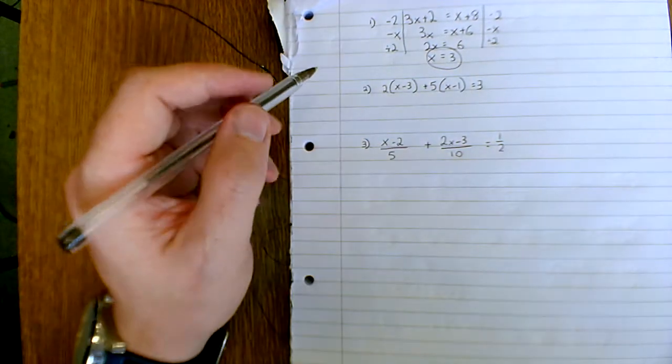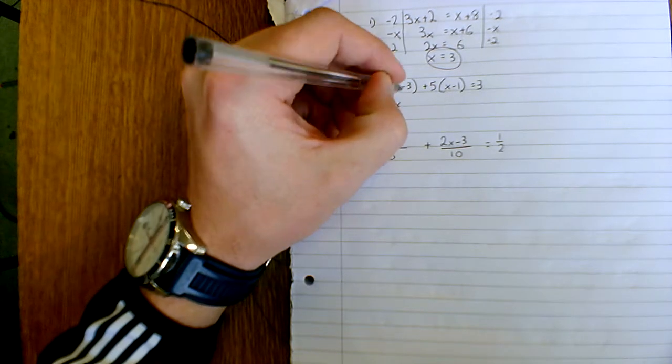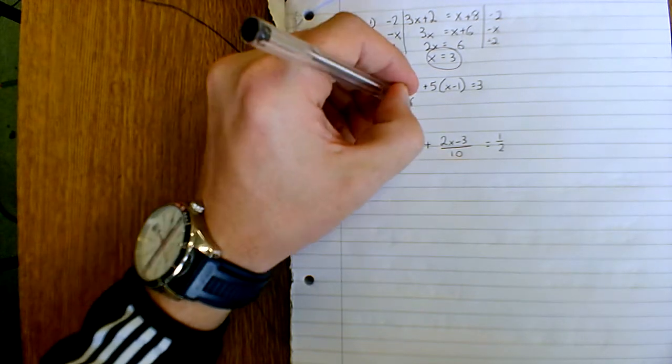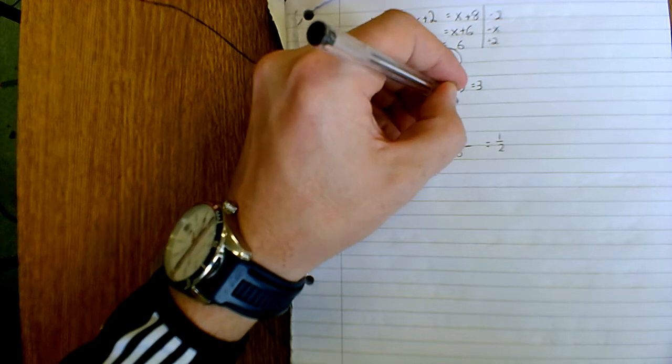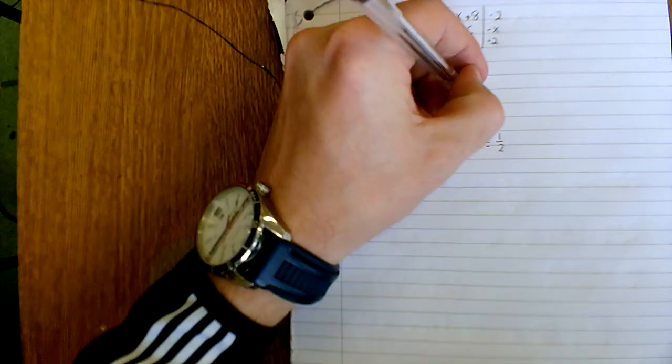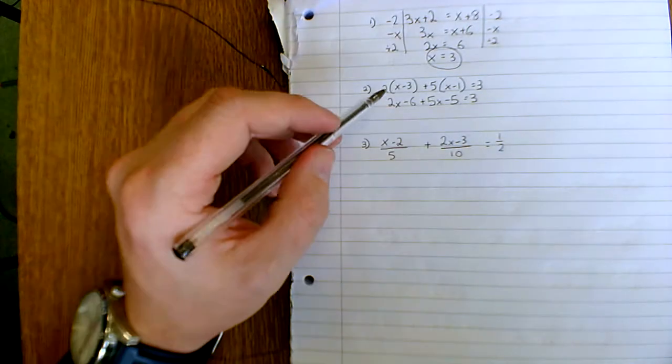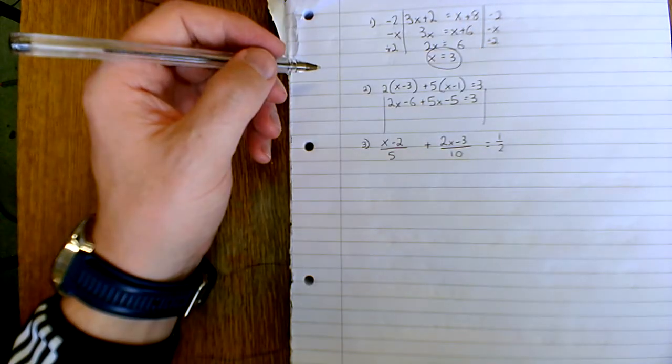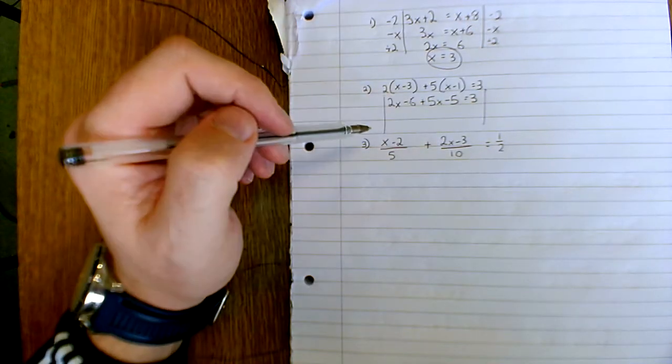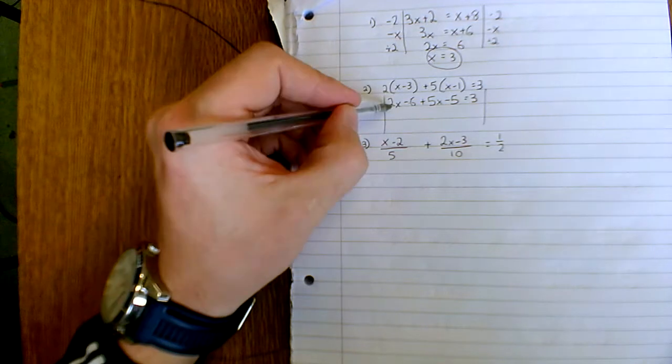Plus 5x, plus 5x minus 5. Okay, make sure your sign is there. Equals 3. Okay, I'm going to have my x's to one side, numbers to the other. So I'll keep my x's here, so I'll just simplify it first.